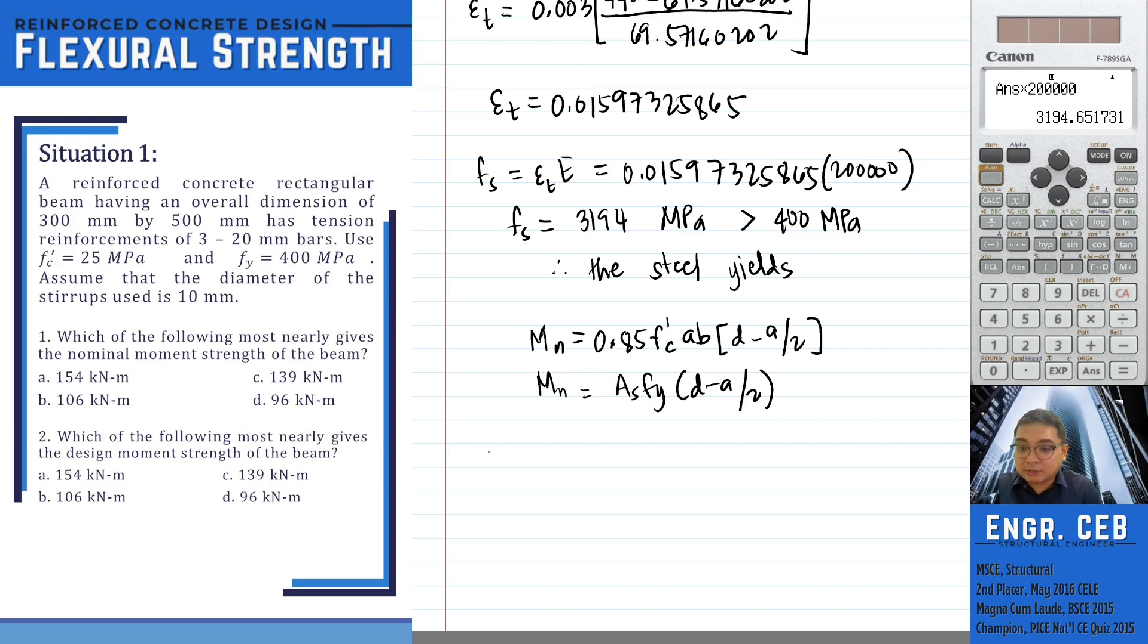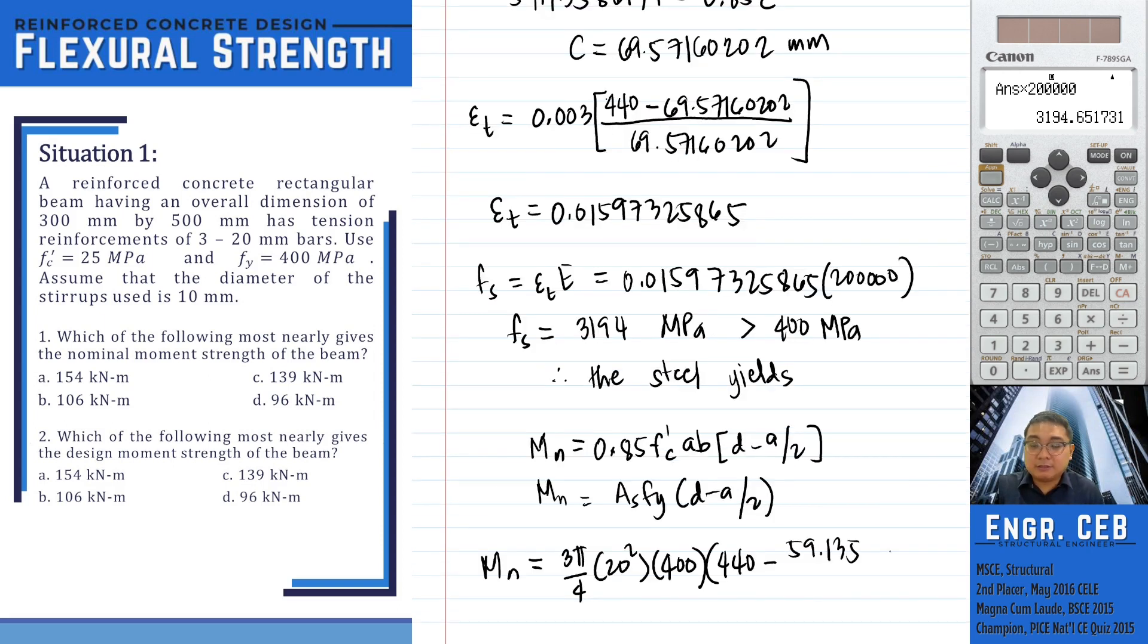Let us now substitute the value. Let's say we use the second formula, AS FY—sorry, D should be 20—times 400 times the effective depth minus A which is 59.13586171 over 2.